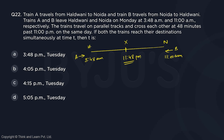The time taken by Train B to reach from N to X: it started at 11 a.m. and reached X at 11:48 p.m., so it has taken 12 hours 48 minutes. 48 minutes in hours is 48/60, which gives us 12.8 hours.